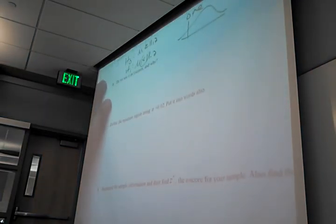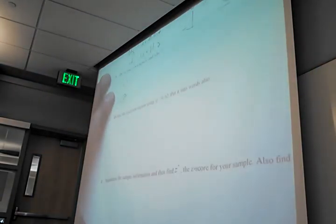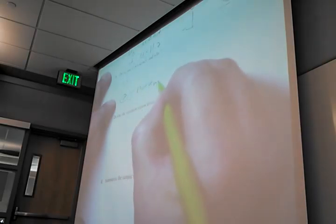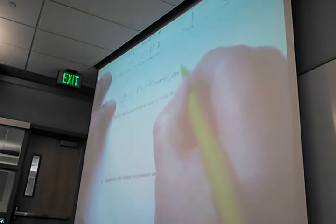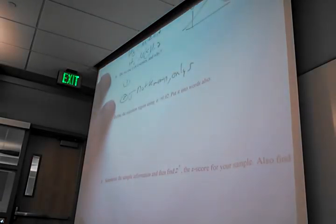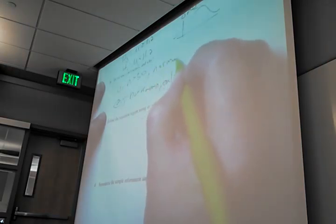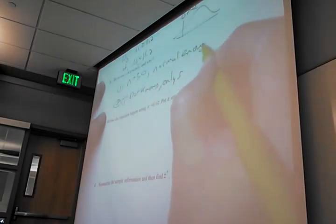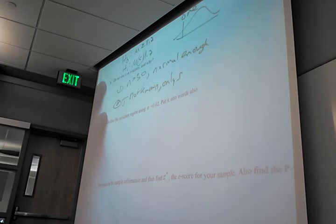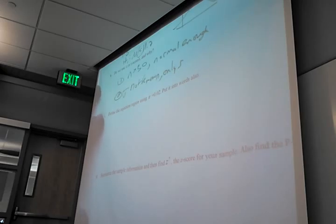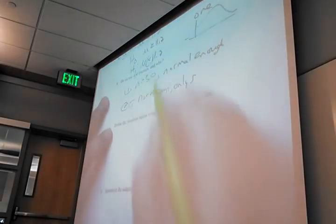Z or t-scores? T-scores. Why? Because the sample standard deviation is known, sigma not known. Only s. What's the number one assumption then? N greater than 30, normally enough. You always got to say those two things: why is it normally enough and which standard deviation do we know.